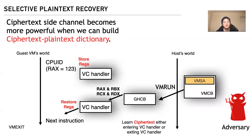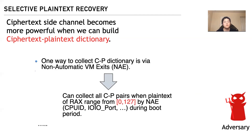For the subsequent VM resume, the VM resumes from the #VC handler. The adversary can learn the corresponding ciphertext when the guest VM enters or exits the #VC handler. In this way, the adversary can build a ciphertext-to-plaintext dictionary. For RAX, the adversary can collect all ciphertext-plaintext pairs when the plaintext runs from 0 to 127 through these NAE events during the boot period.